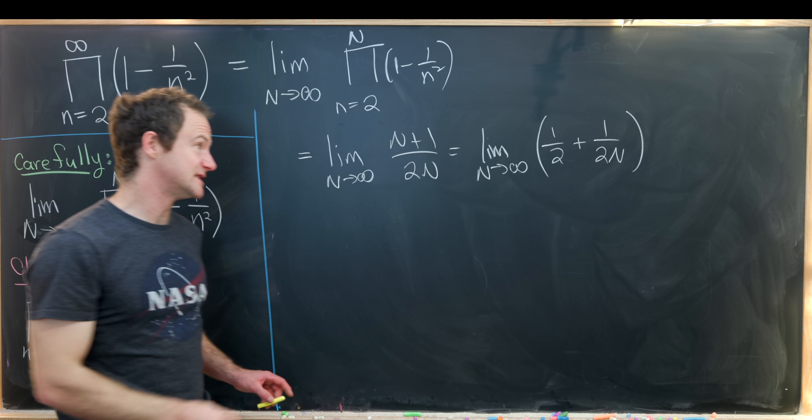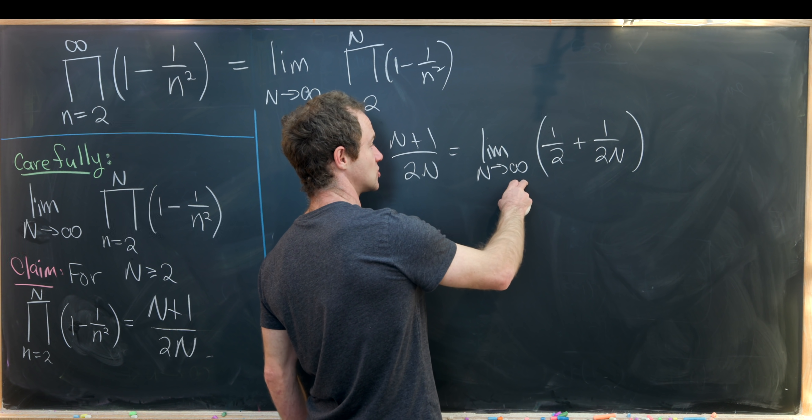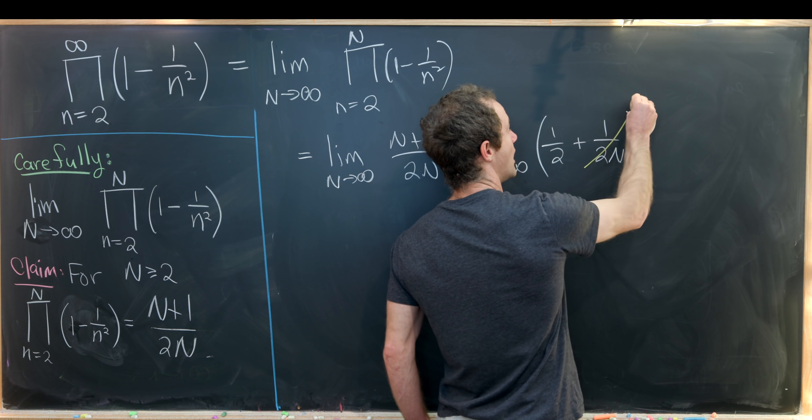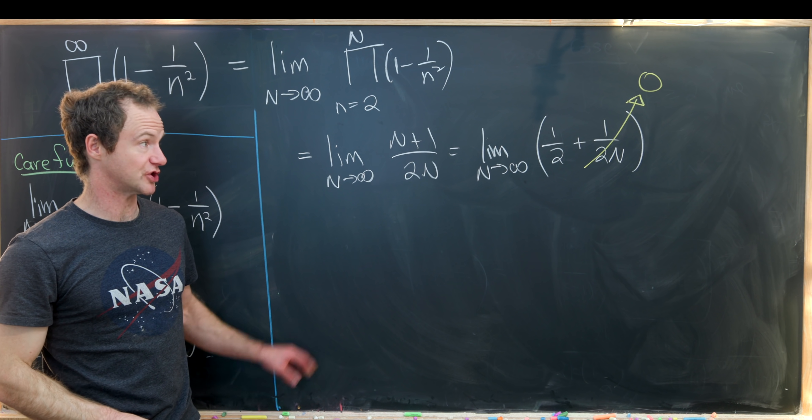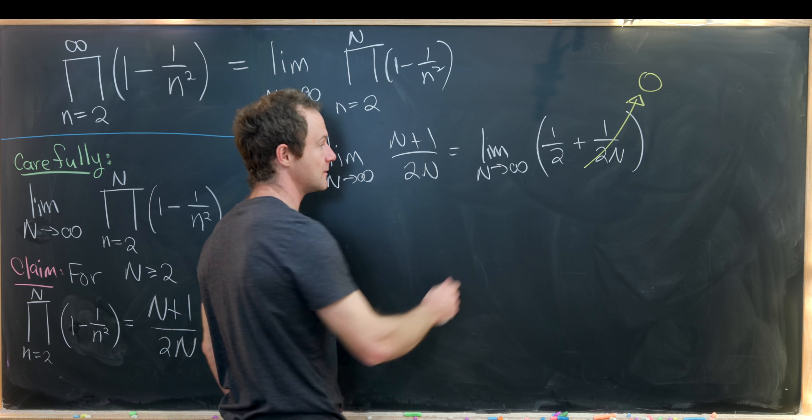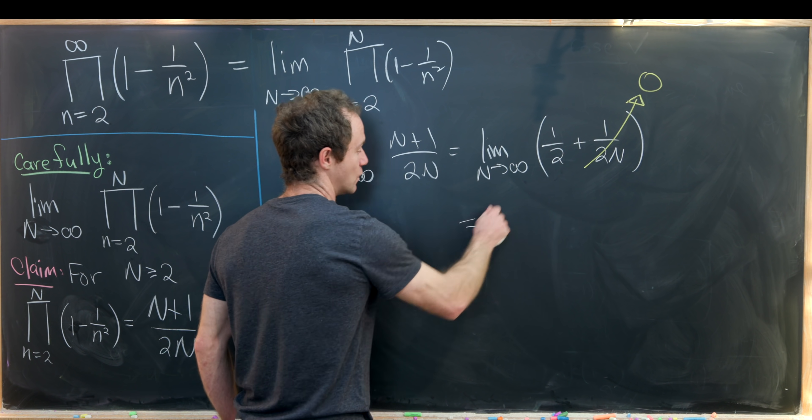But now it's pretty easy to see that as N gets larger and larger and larger, 1 over 2 times N gets smaller and smaller and smaller. So that portion of our limit tends to 0 and we're only left with this 1 half.